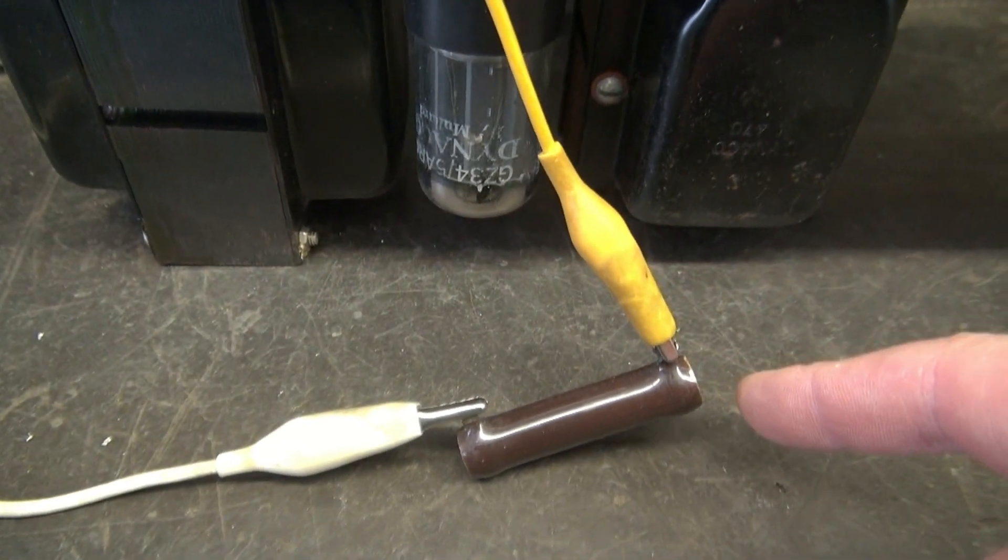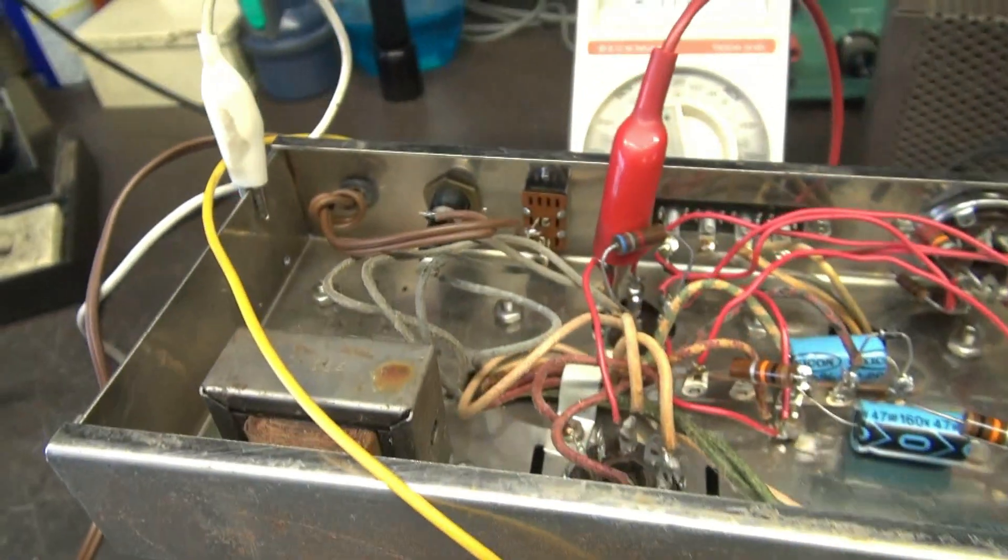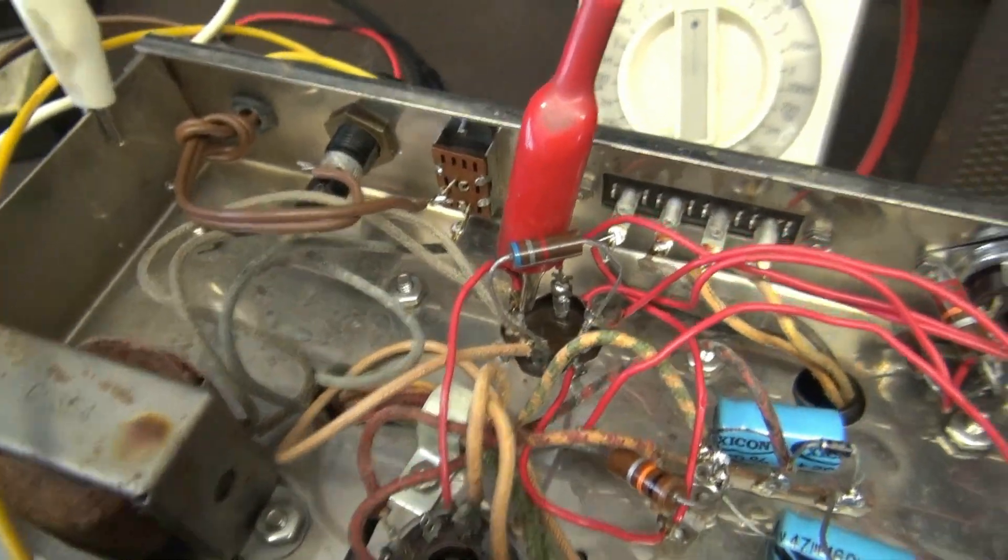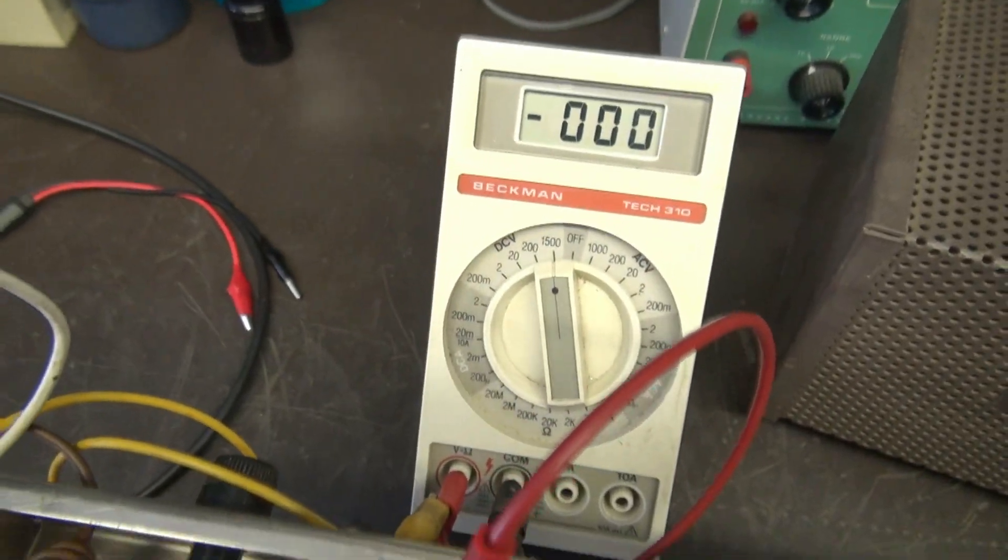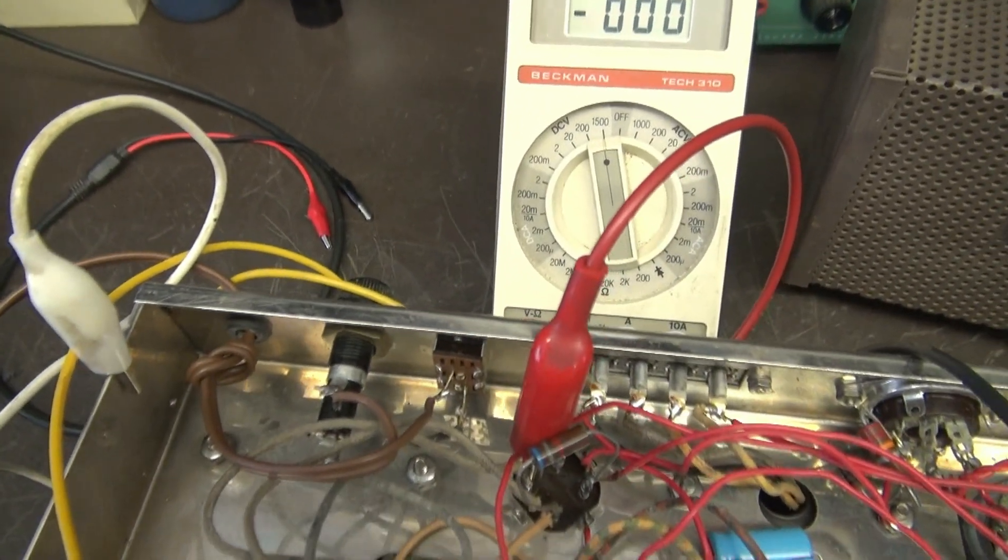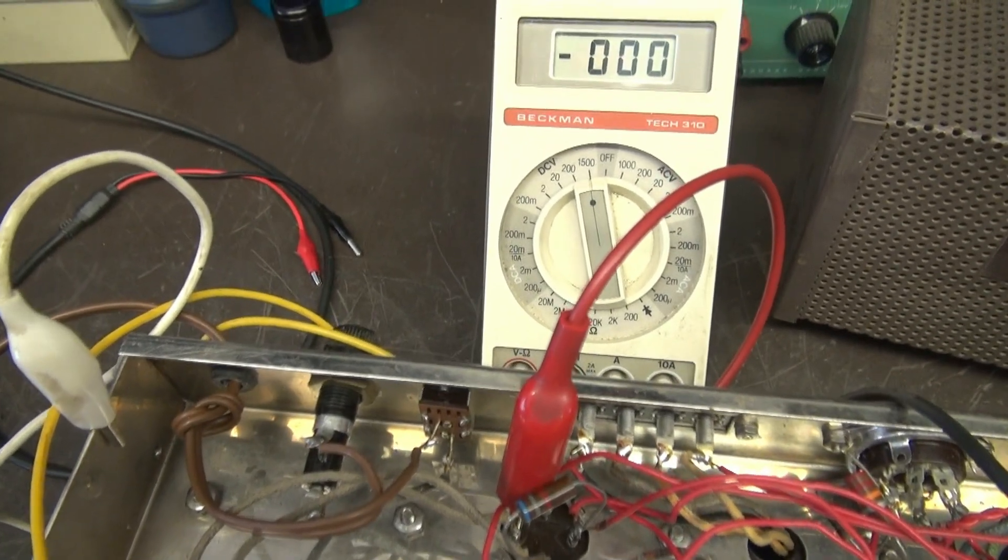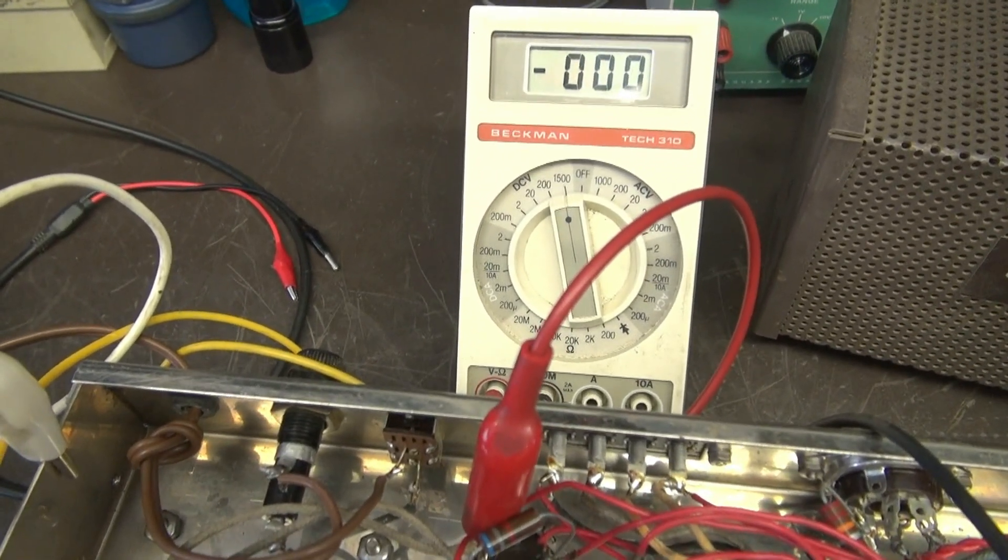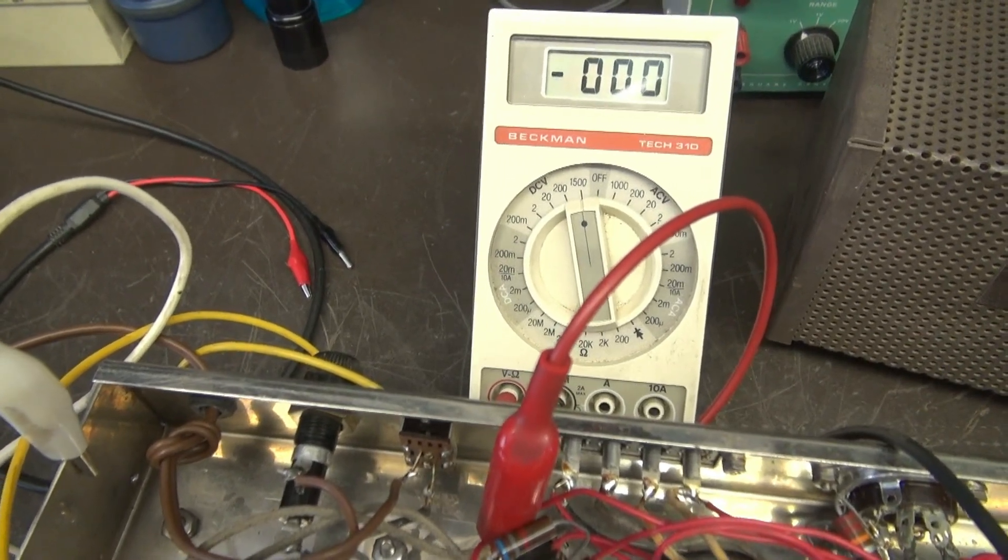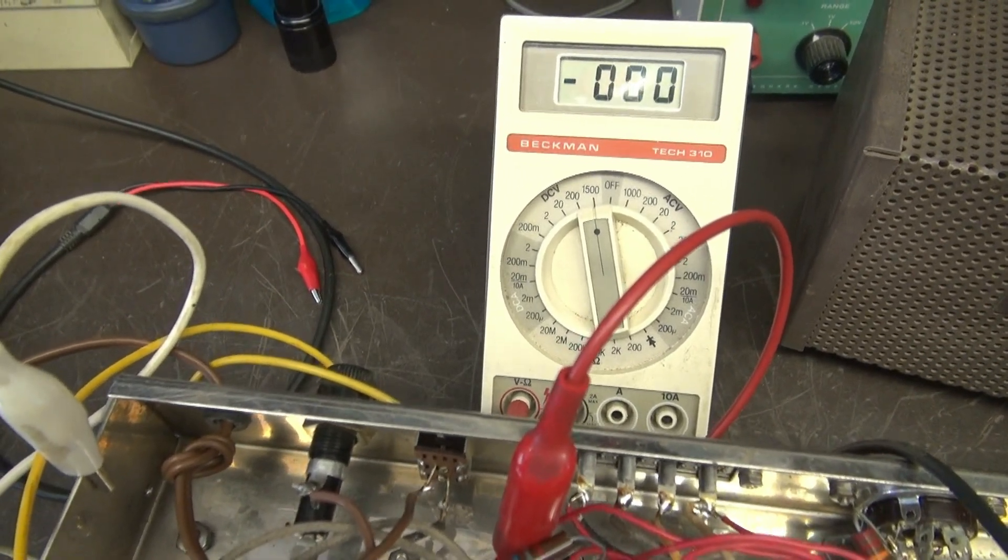This is a 25k resistor, 20 watt that I have in parallel across the filter cap. And I've got the old meter looking at the high voltage. I'm going to bring up the Variac. I'm not going to bring it up all the way.